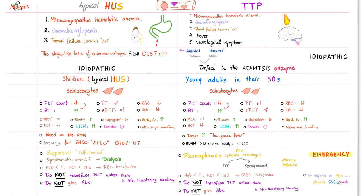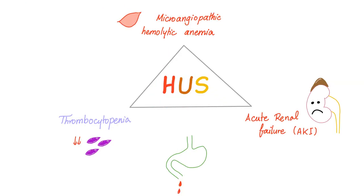Today's topic is atypical HUS. Typical HUS — please remember E. coli O157:H7 — this is the Shiga-like toxin of the enterohemorrhagic E. coli. We call this STEC: S for Shiga-like, T for toxin, EC for E. coli. Management of typical HUS is supportive care. Remember that typical HUS is a triad of microangiopathic hemolytic anemia, thrombocytopenia, and acute renal failure — plus bloody diarrhea due to the enterohemorrhagic E. coli.